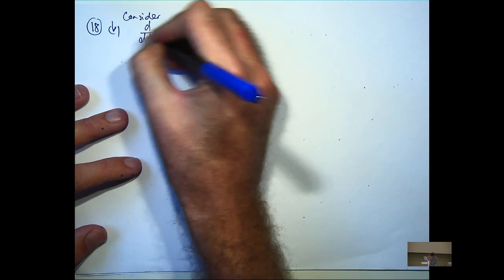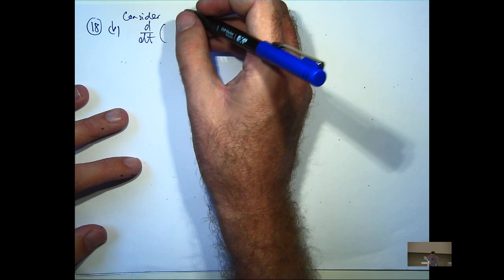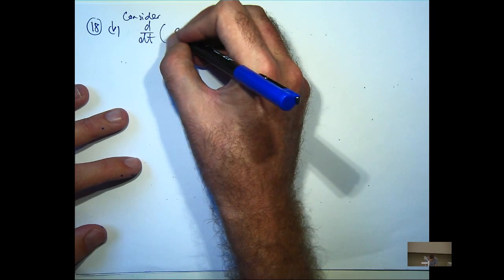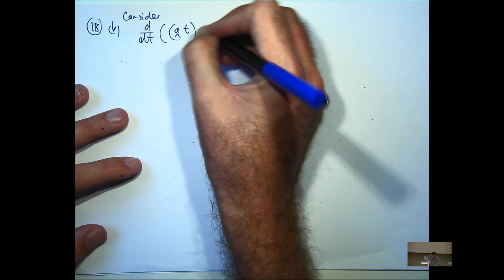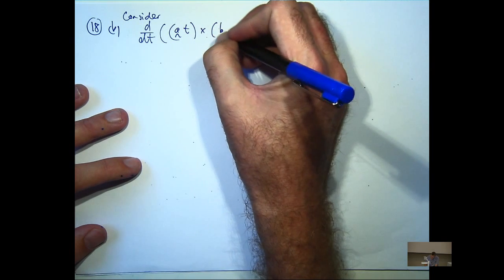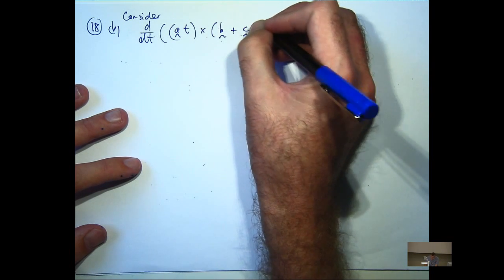So, d/dt of... Okay, so a is a constant vector, b is a constant vector, and c is a constant vector.